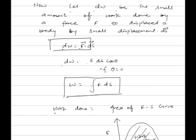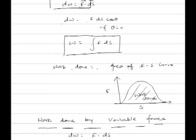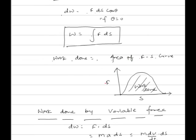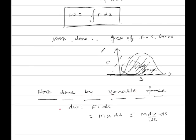Work done is also given by the area of the force-displacement curve. If the curve of force versus displacement is given, then the area of the curve enclosed on the displacement measures the work done. Work done by variable force: dW equals F into ds, where F equals mass into acceleration, which is m dv/dt dot ds.